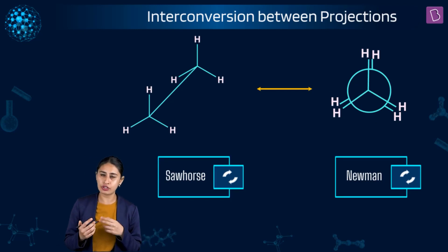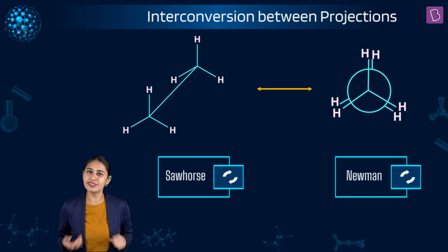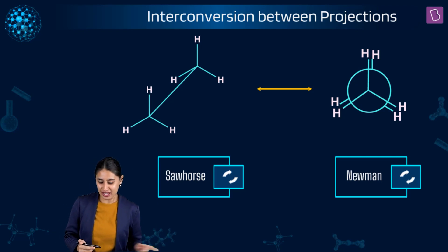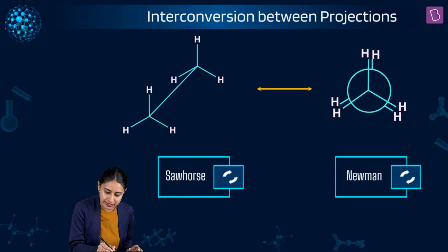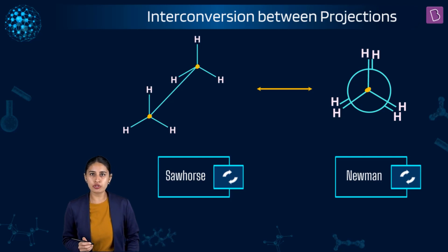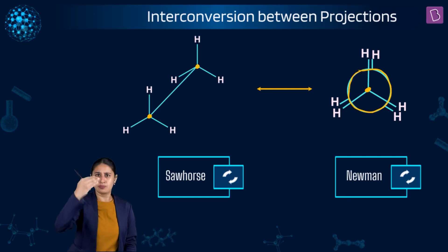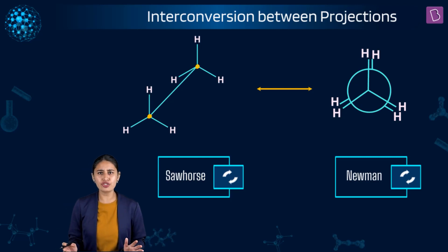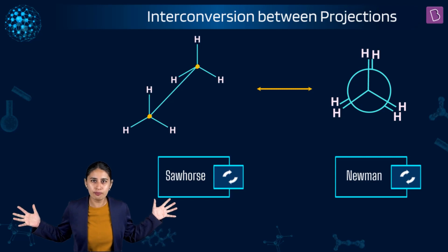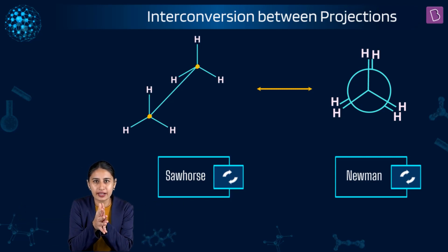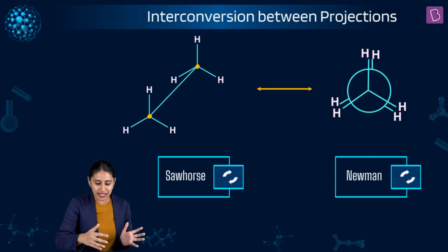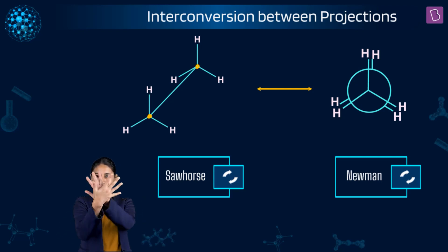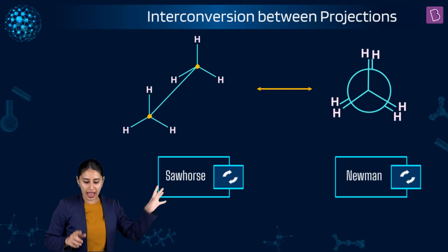I'm restricting right now to ethane, but I will talk about propane and butane. In your syllabus: ethane, propane, and butane. The sawhorse uses a slant line — this is carbon one, this is carbon two. In the Newman, the point where the three hydrogens meet is the front carbon, and the back circle is the second carbon. Imagine Tom getting squeezed into a coin — that's like taking the sawhorse and squeezing it into the Newman 2D view.